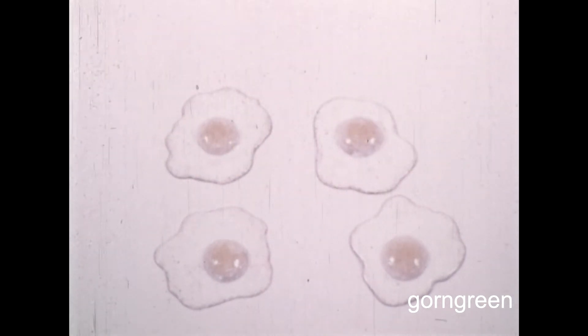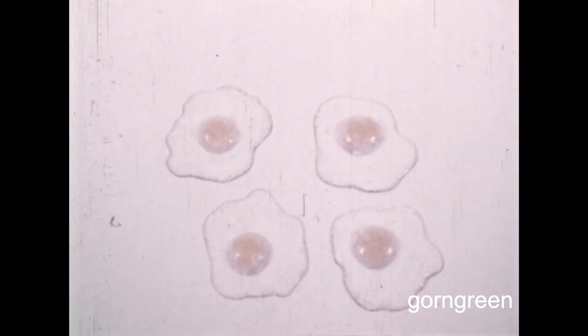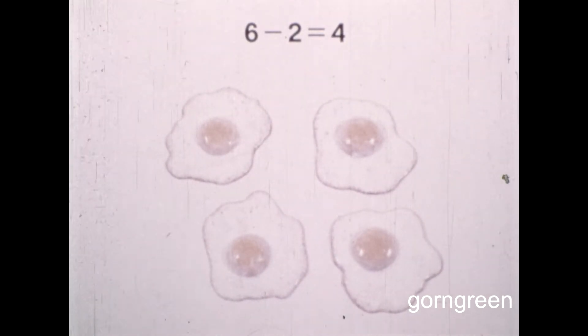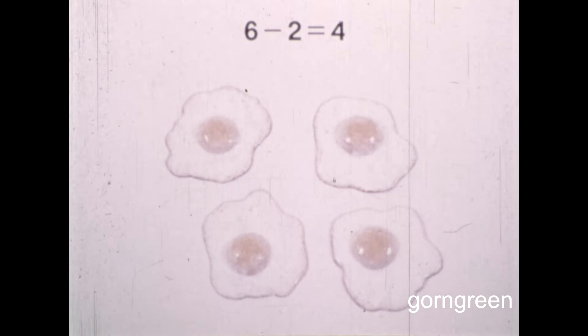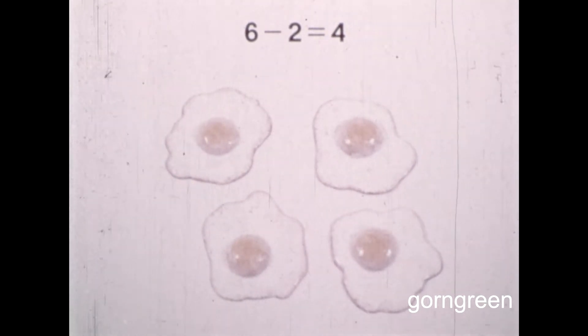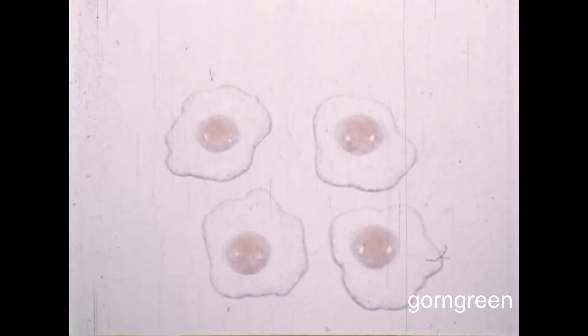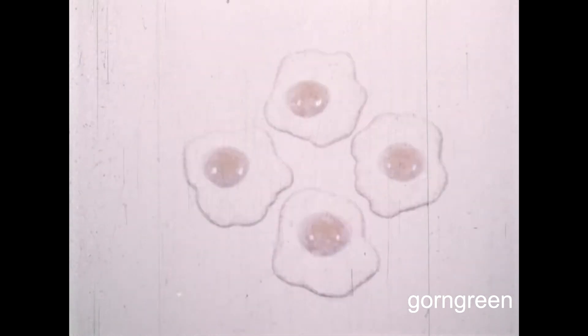And how many are left? One, two, three, four. There are four left. So we can say that six, take away two, leaves four. Let's state this as a mathematical sentence. Take away is written with a little line like this. It's called a minus sign. It simply means take away. Now, can you read what it says there? Six, take away two, equals four. Right. Or six minus two equals four.